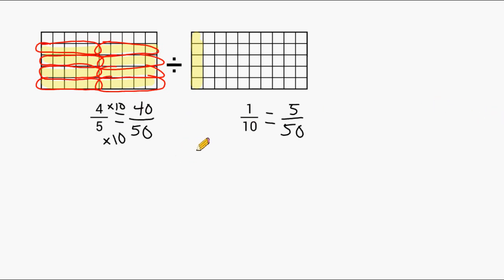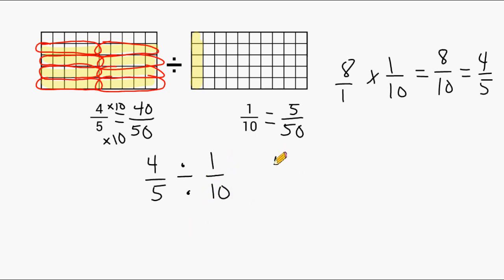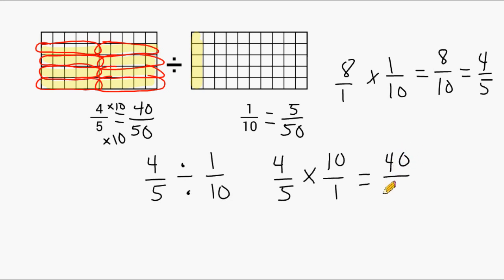We can show that using multiplication: 8 times 1 tenth gives us 8 tenths, which simplifies to 4 fifths. Now let's use the standard algorithm: take 4 fifths divided by 1 tenth, keep the first fraction as 4 fifths, change division to multiplication, and write the reciprocal of 1 tenth, which is 10 over 1. Multiplying the numerators gives 40, and the denominators give 5, so 40 divided by 5 equals 8 — proving it takes 8 groups of 1 tenth to produce 4 fifths.